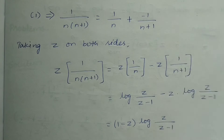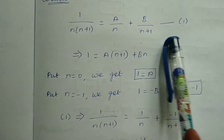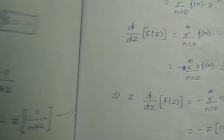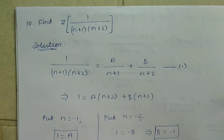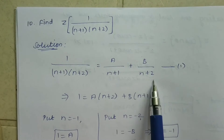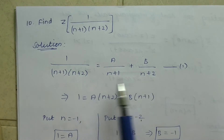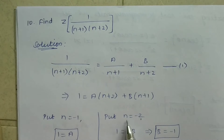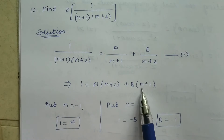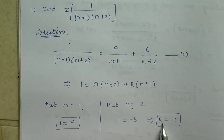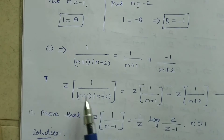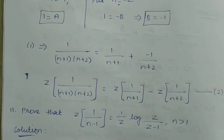This is a simple problem if we split using partial fractions, though this one is a little different. This is a problem that has appeared four times as a university exam question. We write A by n plus B by (n+1), cross-multiply so the denominator is the same, and then equate the numerators: 1 equals A(n+1) plus B(n). From this we find a and b values and substitute into the equation to get the Z-transform answer.